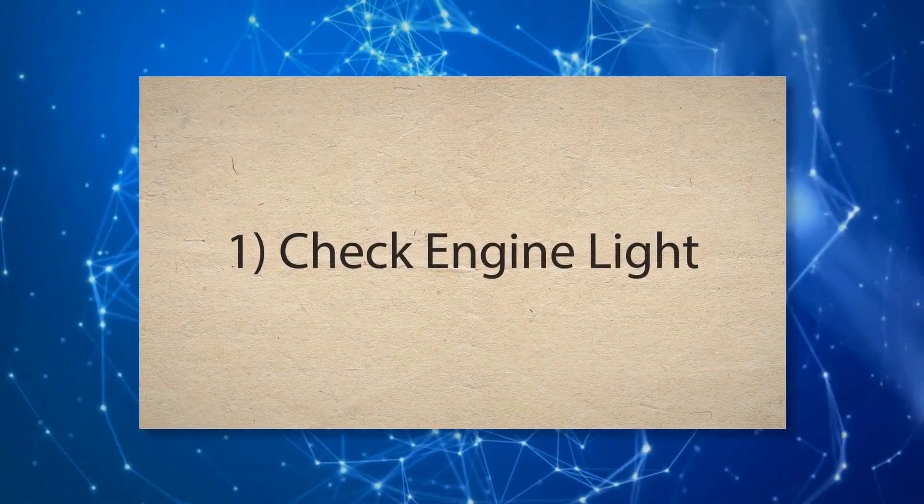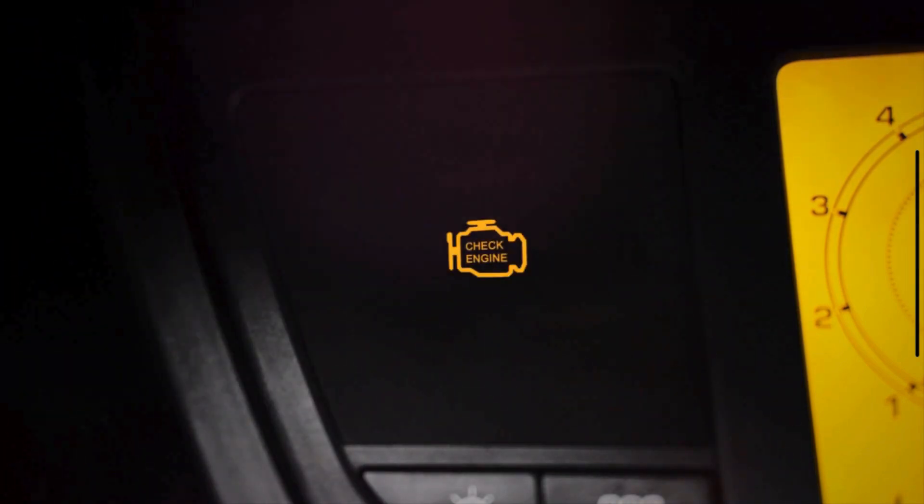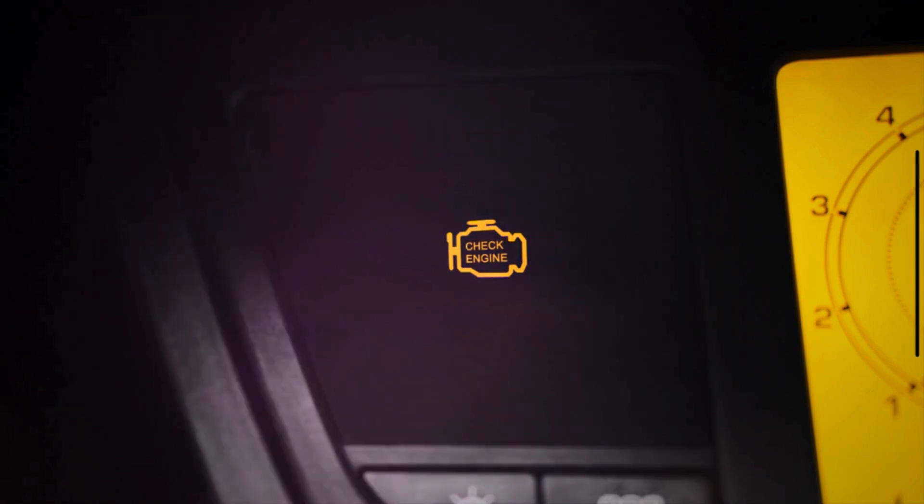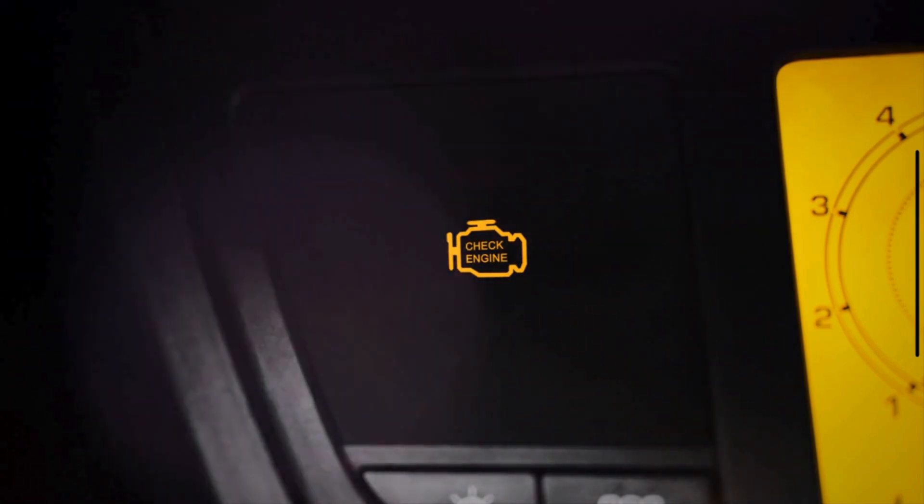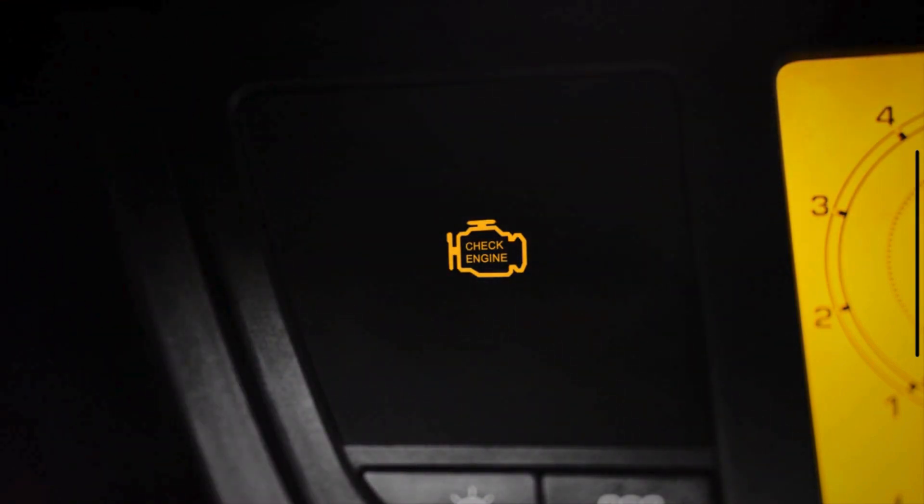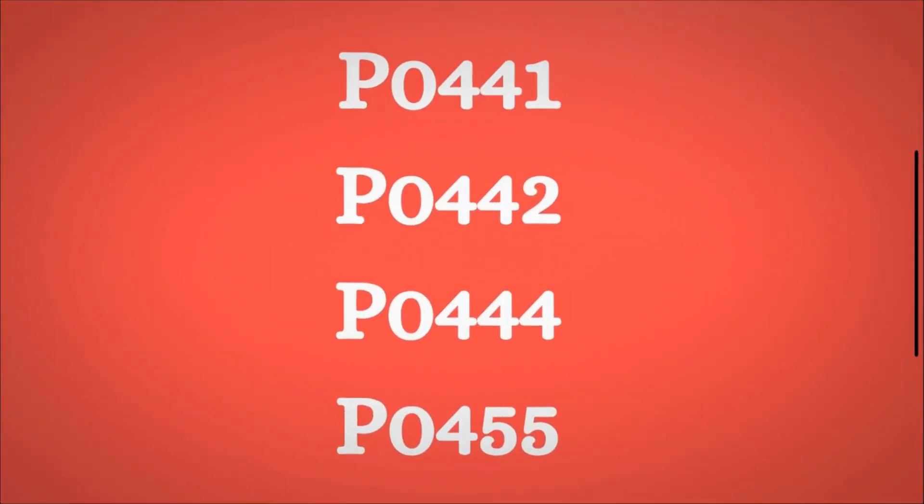1. Check engine light. One of the most common symptoms of a bad purge valve is the illumination of the check engine light. The engine control unit continuously monitors the performance of the purge valve. When it monitors an issue with the purge valve, it triggers the check engine light. A bad purge valve may also trigger a diagnostic trouble code such as P0441, P0442, P0444, or P0455.